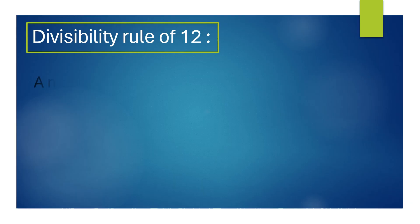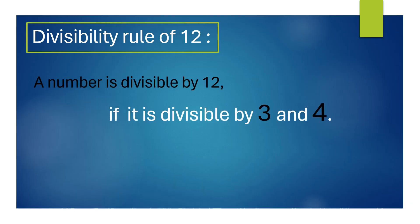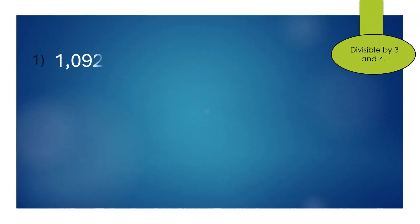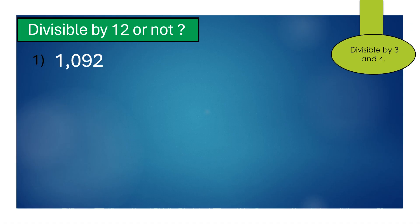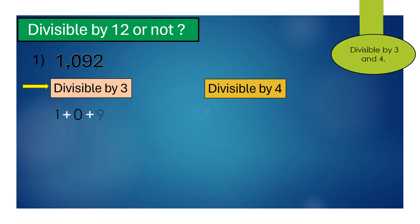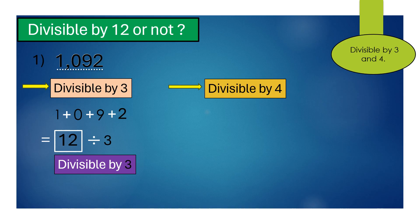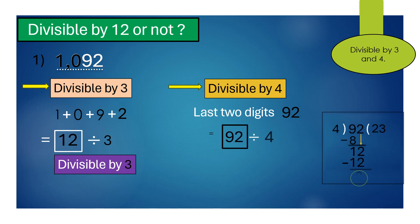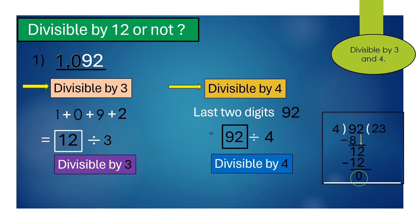Divisibility rule of 12: a number is divisible by 12 if it is divisible by both 3 and 4. For 1,092, we add the digits and get 12. Since 12 is divisible by 3, the number 1,092 is divisible by 3. The last two digits are 92, and since 92 is divisible by 4, the number 1,092 is also divisible by 4. Therefore, 1,092 is divisible by 12.